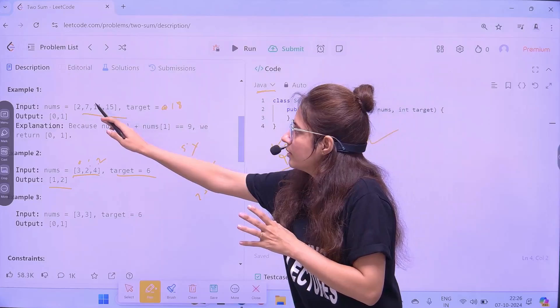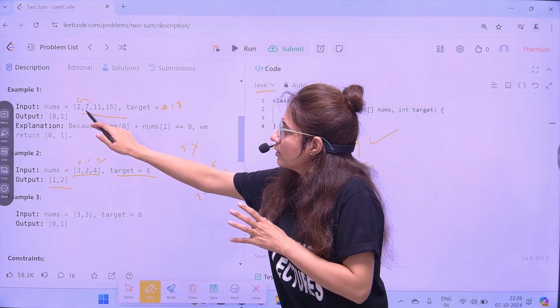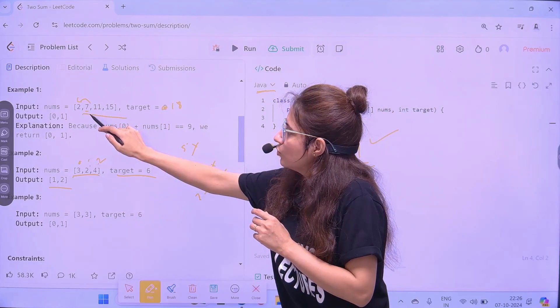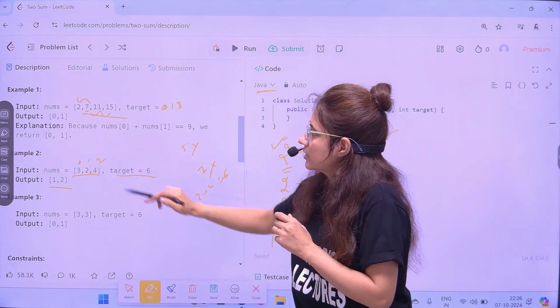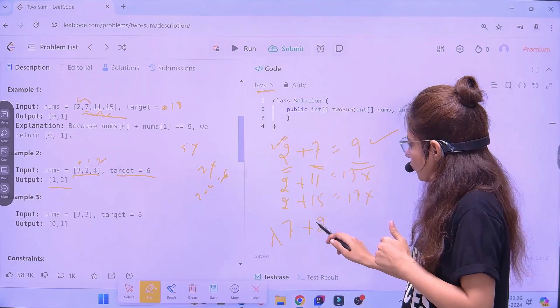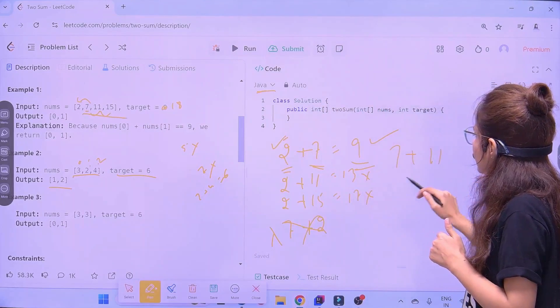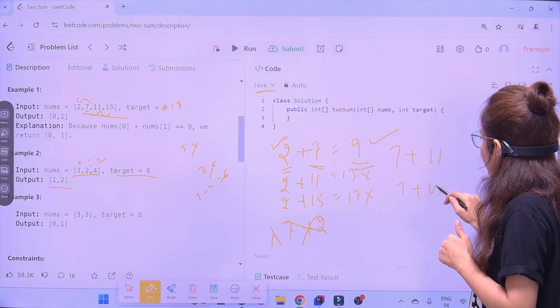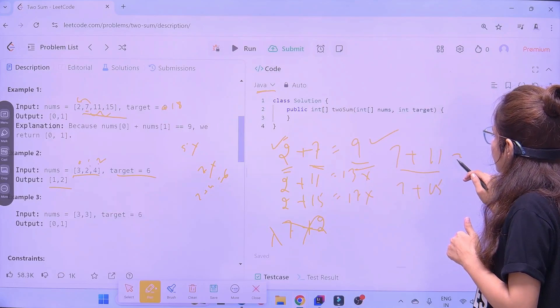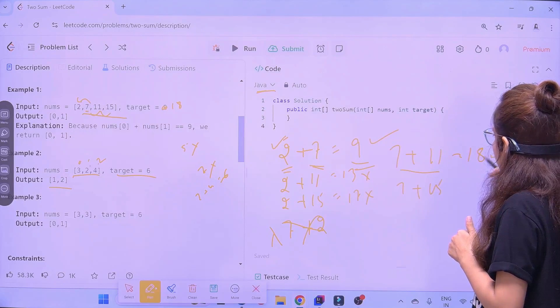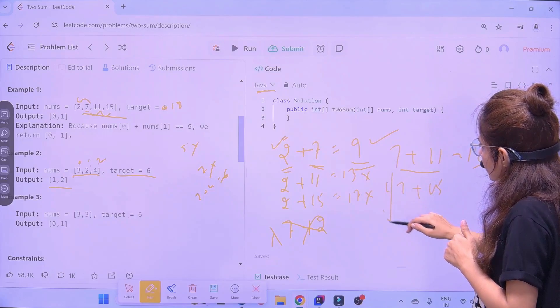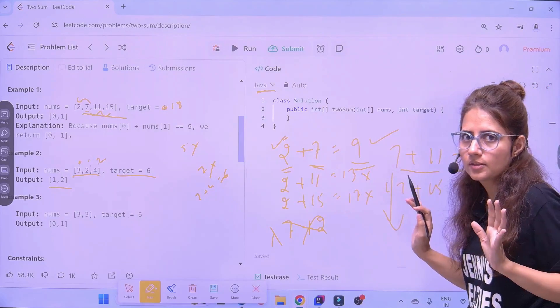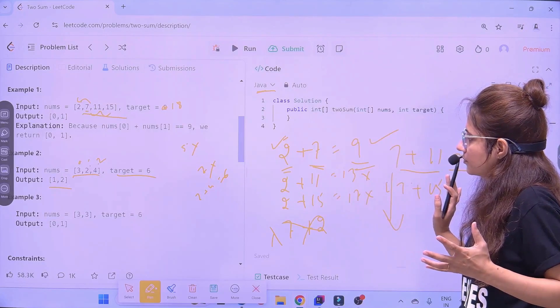So, no need to check backward. If you are at this element, so you will check. Further, like this. You will move further only, forward only. So, we will check not this. We will check 7 plus 11 and 7 plus 15. But, 7 plus 11, this is 18. Yes, you got it. So, you no need to check further. That's it. Just stop and that's it. So, this logic you have to implement.